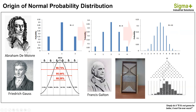That experiment was a physical proof of what Mr. Abraham de Moivre was proving statistically — that by increasing the sample size in a binomial experiment, it will tend to form a normal distribution curve.